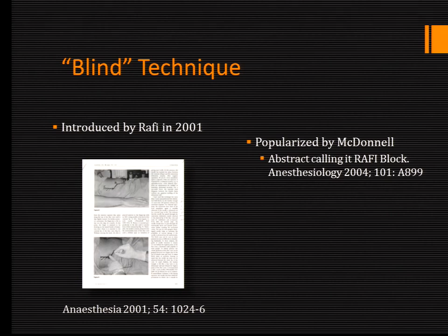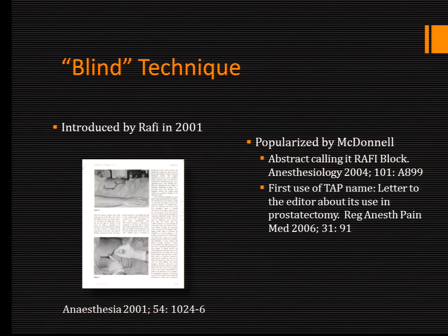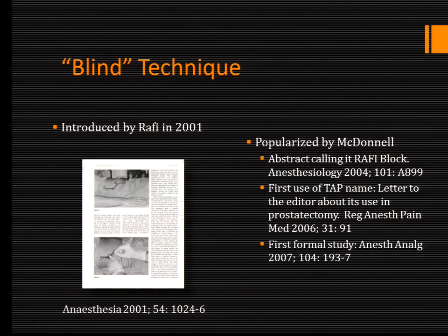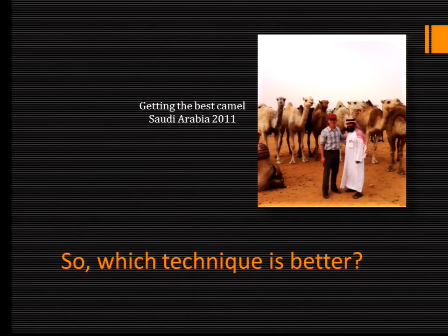His first contribution started in 2004, and at the time he called the block the Rafi block — regional anesthesia field infiltration of the abdomen. The first use of the name TAP came in another letter to the editor in 2006 by one of his contributors, Brian O'Donnell. He sent this letter to Regional Anesthesia and Pain Medicine, saying the block had been used in 12 patients for prostatectomy with good effect — a humble origin to the name TAP. The first formal study came from McDonnell in 2007, just a few months before Herbert introduced the ultrasound technique.